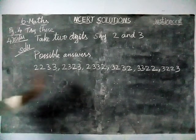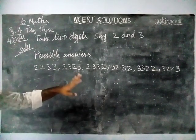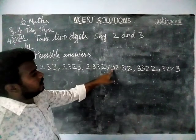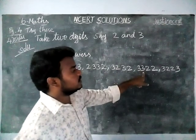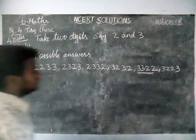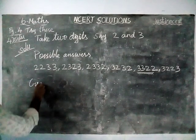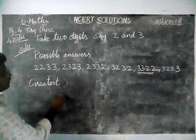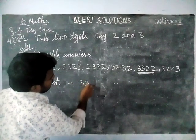In this, the greatest number — firstly we have to see the digits. Listen, all the numbers are 4-digit numbers, so we have to see the digits first. In this, 3 is the largest digit, so the greatest 4-digit number is 3322.